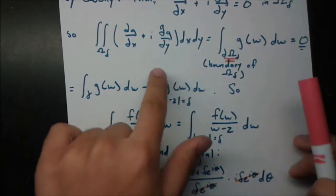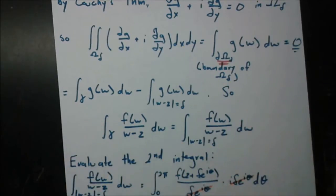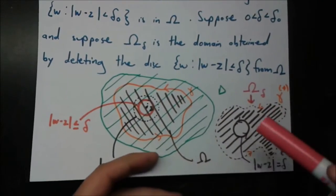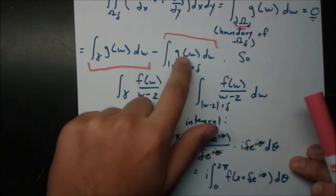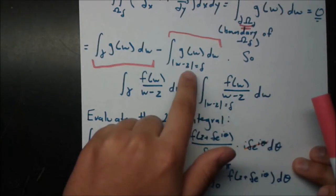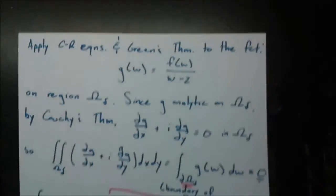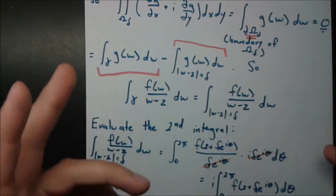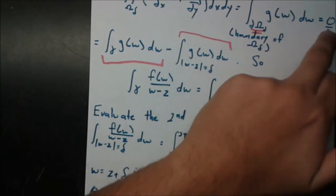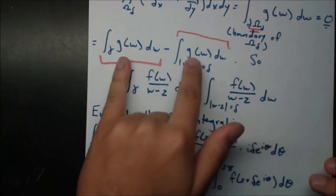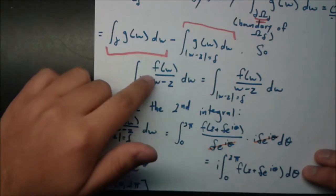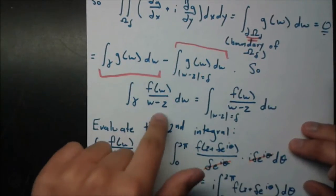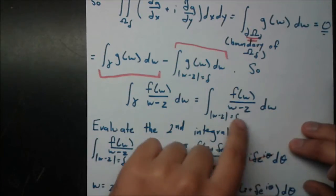Since the boundary consists of two pieces, we have the gamma piece minus the piece around the hole — minus because that part is negatively oriented. So: integral of g(w) dw over gamma, minus the integral of g(w) dw over the circle modulus W minus Z equals delta, equals zero. That means the two integrals are equal. Expanding g(w) back to f(w)/(w−z), we get the integral of f(w)/(w−z) dw over gamma equals the integral over the small circle.